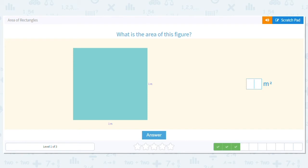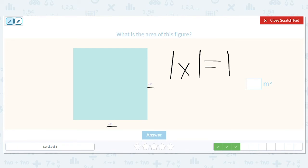Next problem. It's a square, and this one has one meter by one meter. So what is my multiplication problem? One times one. What is one times one? One. Good job.